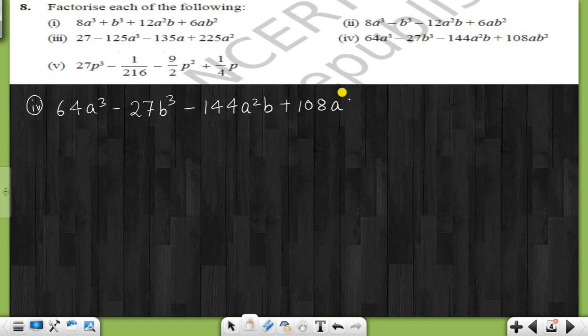Right, this is the number. We will use x minus y whole cube. What is this? x³ minus y³ minus 3xy into x minus y. This is our identity. Here we will use x, here we will use y.